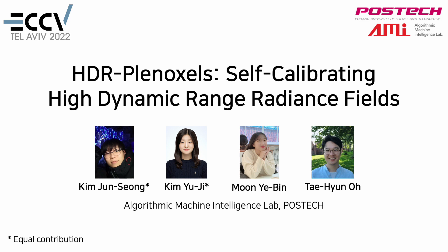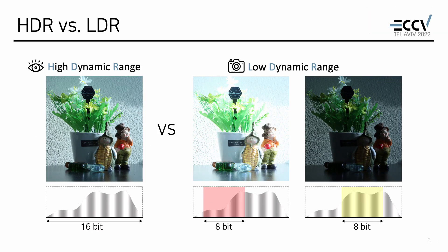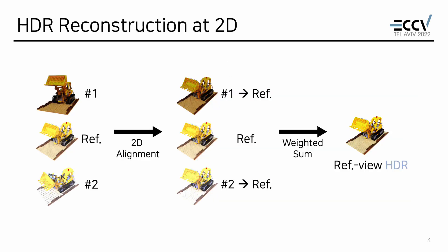This is joint work with Yebin Moon and Taeyeon Oh. Dynamic range is a sensible range of light intensity. Unlike human eyes that can see very dark and very bright light at the same time, camera sensors have limited dynamic range, which causes saturations. To overcome this limitation, HDR reconstruction methods have been studied.